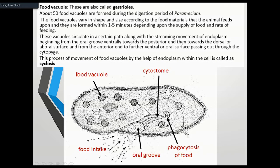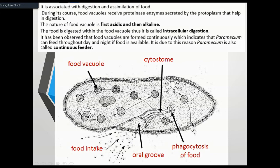The food vacuoles are the same as gastrioles. In this process, food vacuoles contain digestive enzymes. Food vacuoles carry out digestion, and the products are transported and assimilated by the body.